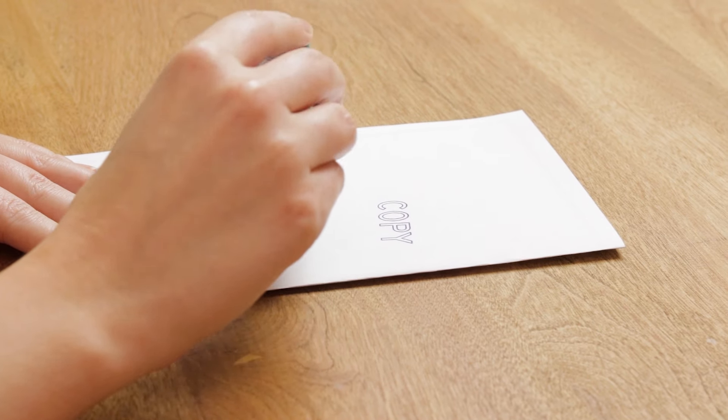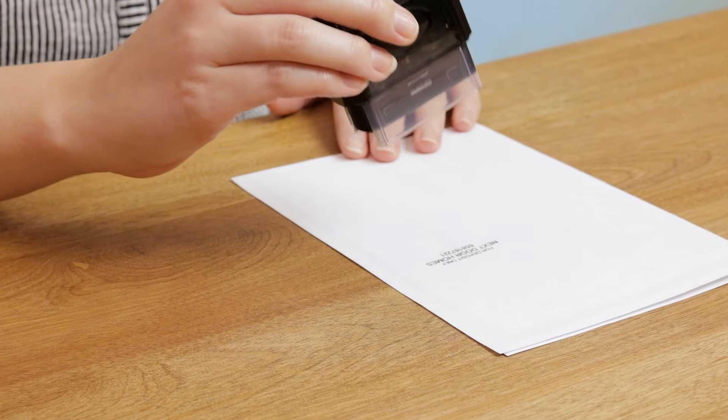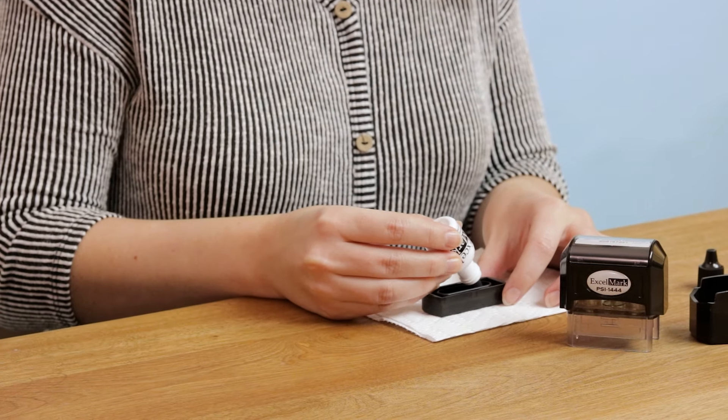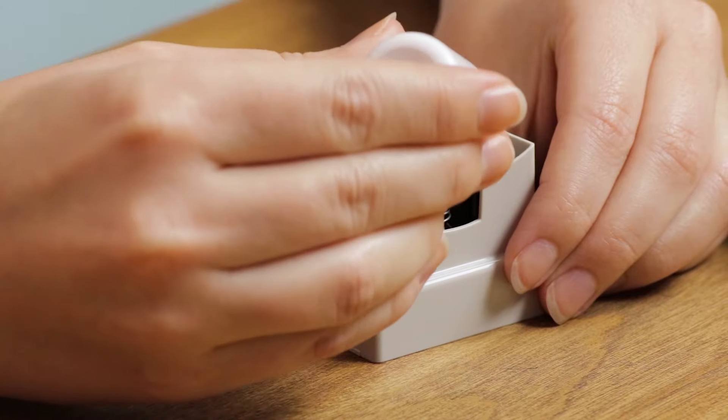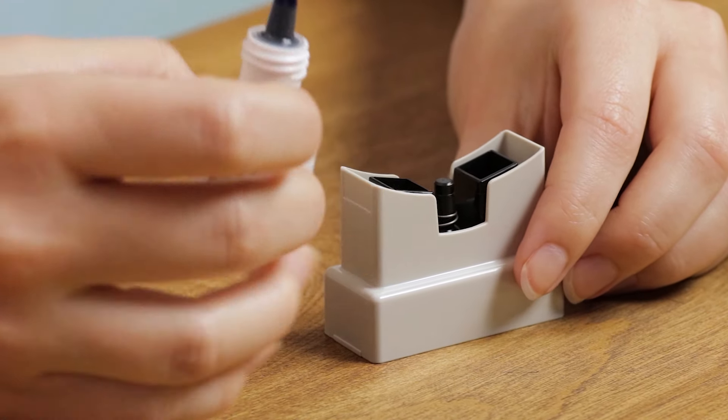After the stamp has absorbed the ink, test it on scrap paper and add more ink if needed. Since pre-ink stamps last for thousands of impressions, it's best to only add a couple of drops of ink at a time to prevent oversaturating the stamp.